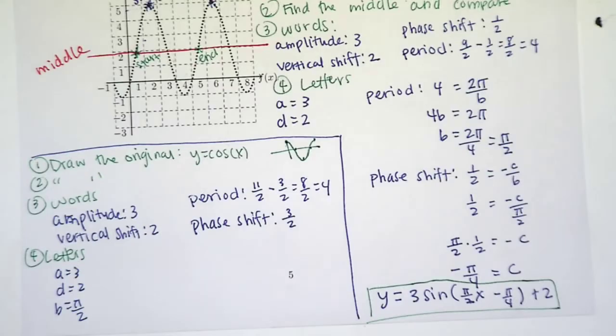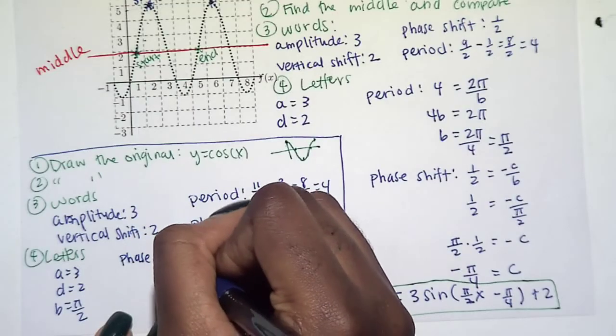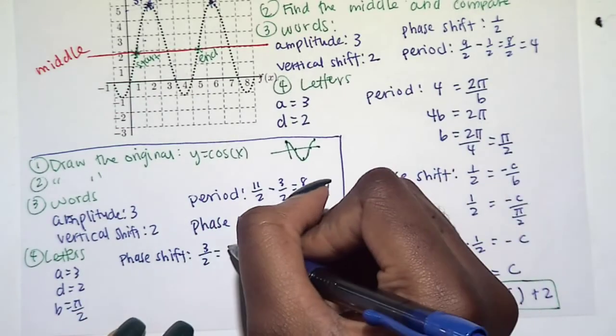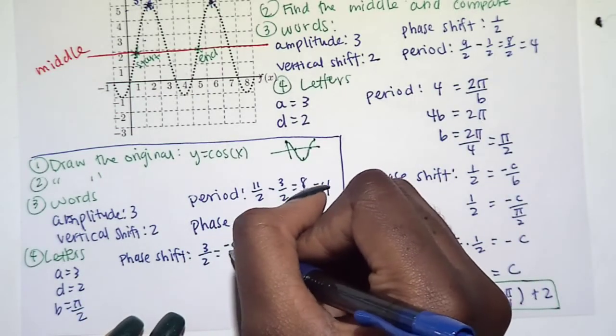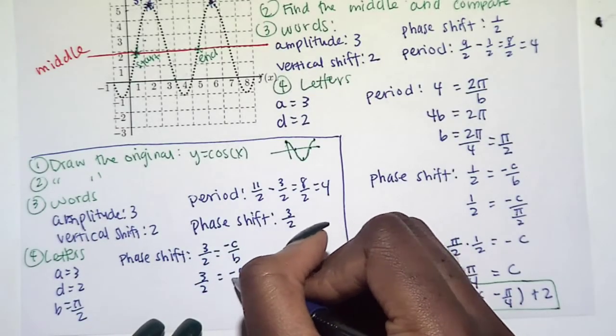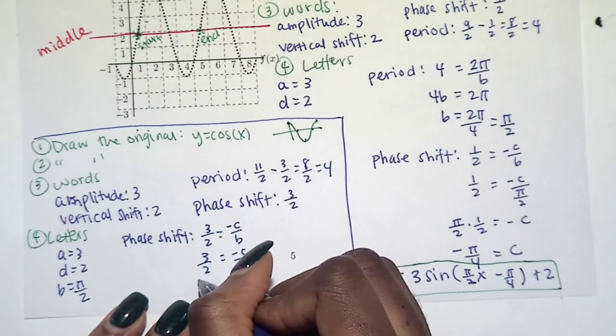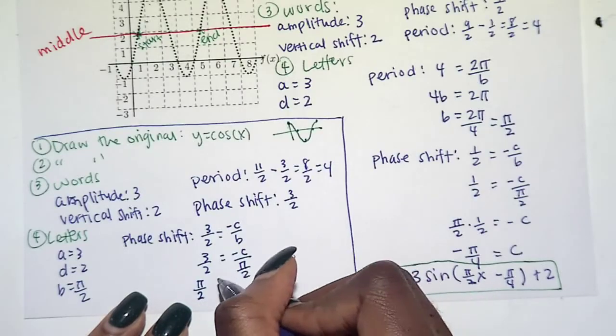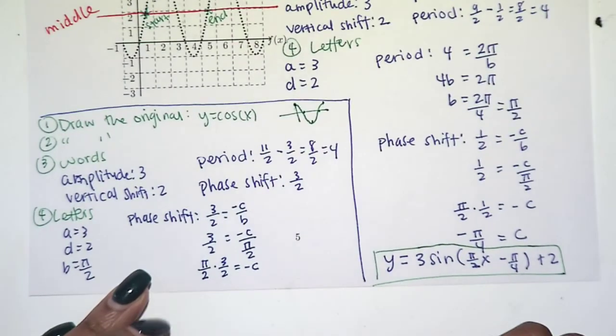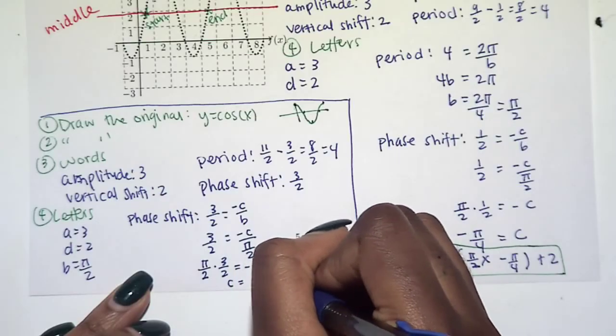So now we just have to figure out what C is, and we get that from the phase shift. All right, so our phase shift was 3 over 2, and we know our formula is negative C over B. Luckily we found B. We get multiplied. C is negative 3 pi over 4.